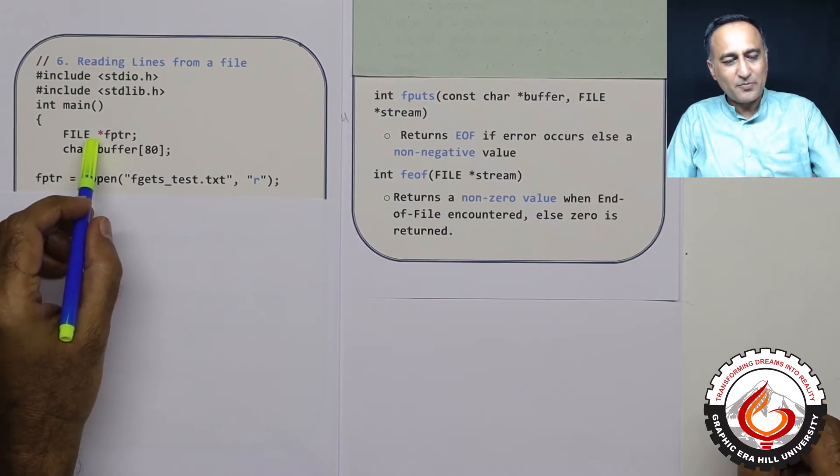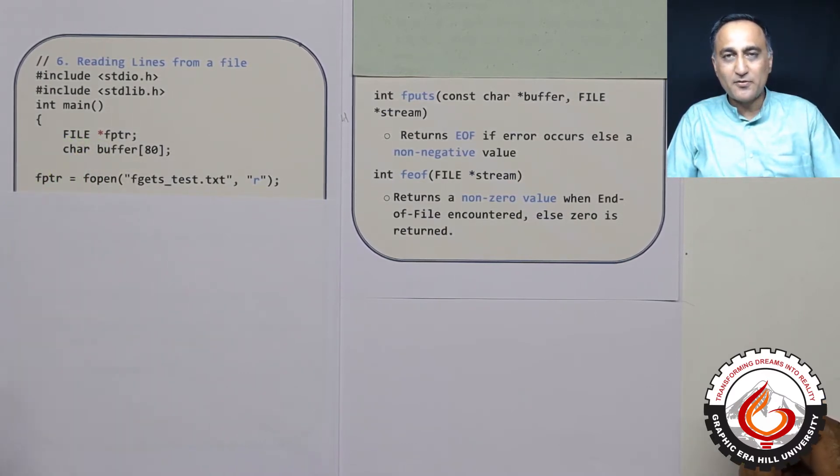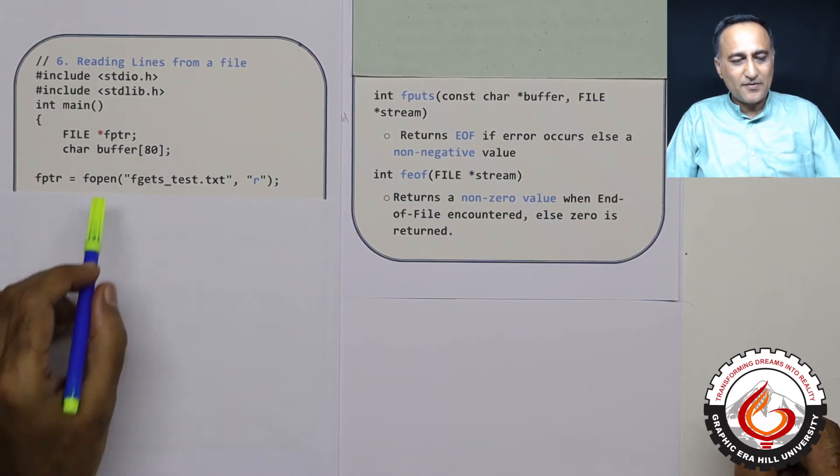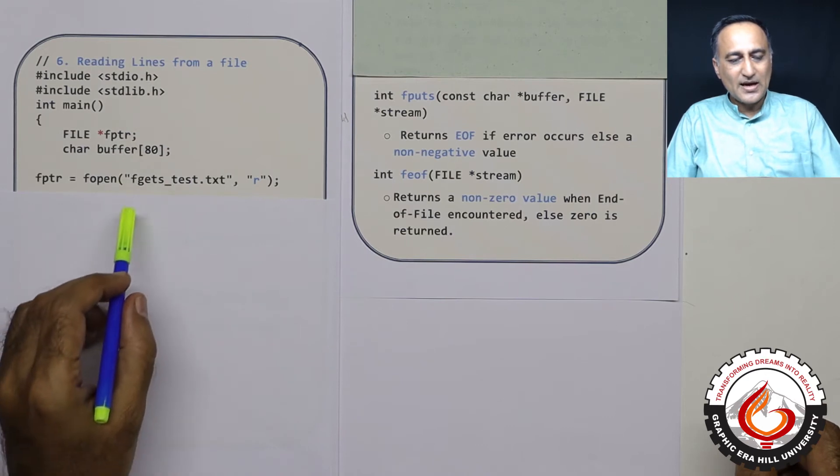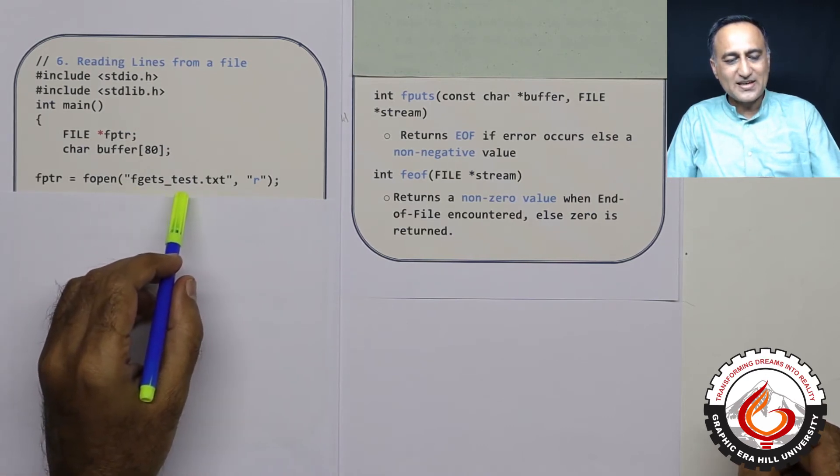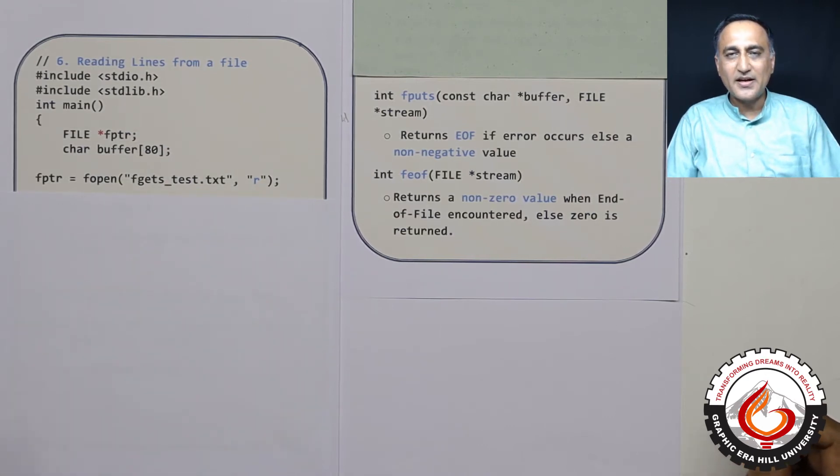So what I have done is I have declared fptr as a pointer to a file type of structure. I have defined buffer as an array of characters of size 80. I have opened a file fgets_test.txt in read mode.